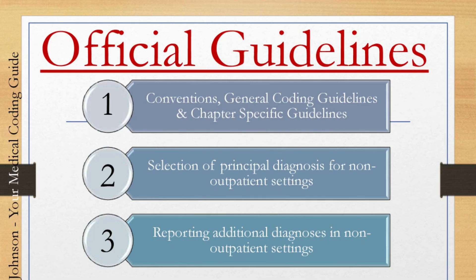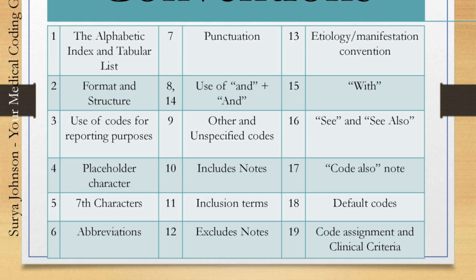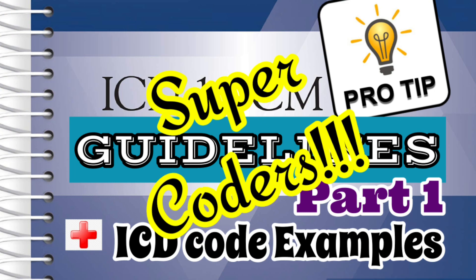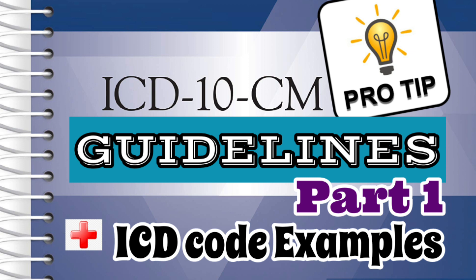Now you should have a clear picture of Section 1, Part A — conventions. We saw all 19 conventions. This might look not very important at first, but this is the basic understanding part. Without knowing what these things are and what they mean, you can be a coder, but I aim for all of you to be super coders. I hope you got a good idea about the ICD-10-CM Official Coding Guidelines Section 1A conventions. If you have any doubts or queries, please put them in the comments section. If you found this video useful, please hit the like button, share it with your coding friends, subscribe to the channel, and hit the notification icon so you won't miss future videos. This is Surya Johnson, your medical coding guide.